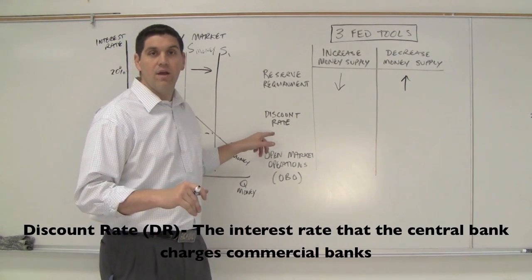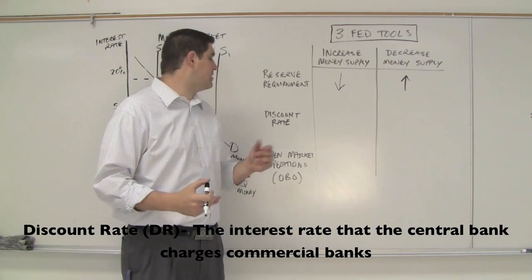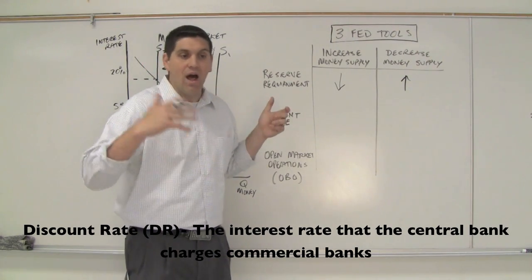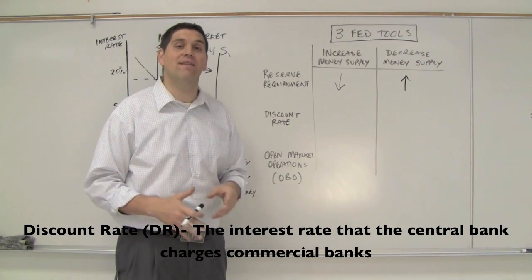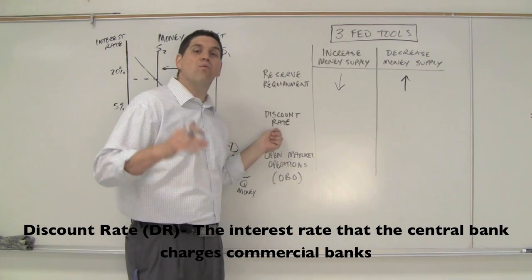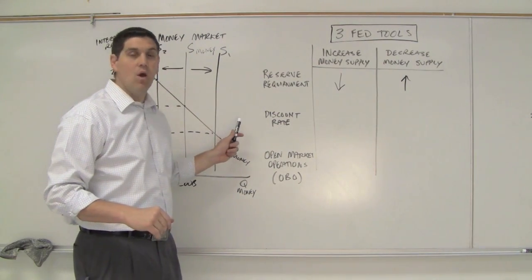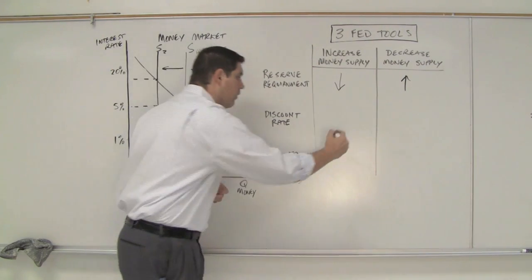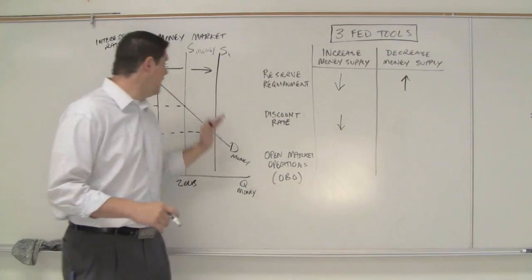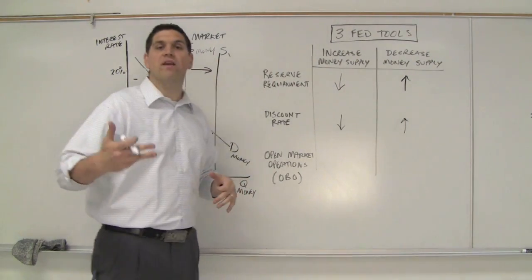The second tool is the discount rate — the interest rate the Fed charges banks to borrow money. If a bank hasn't covered its reserve requirement, it can go to the Fed and borrow. To increase the money supply, the Fed lowers the discount rate, making money easier to borrow from the Fed. To decrease the money supply, they increase the discount rate, making it harder for banks to borrow.